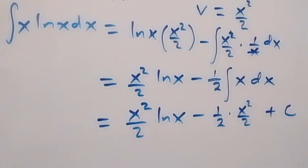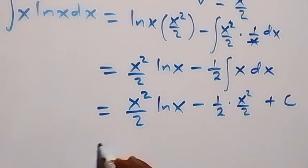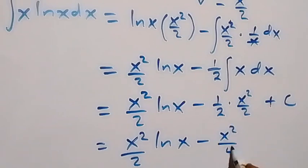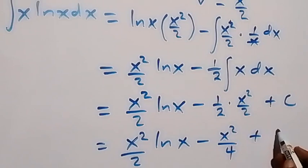Then from here this will then give us x squared over 2 ln x, then minus this becomes x squared over 4, then plus the arbitrary constant C.